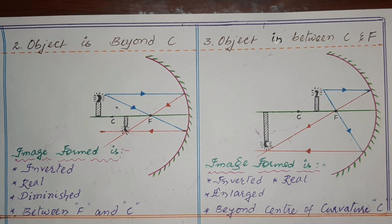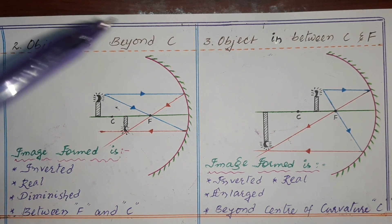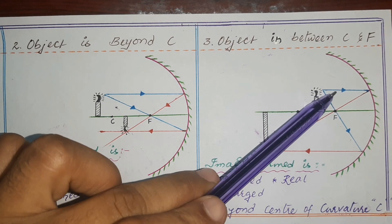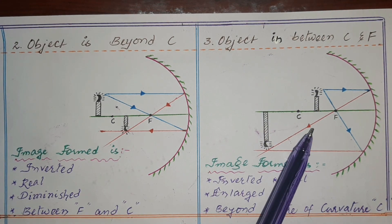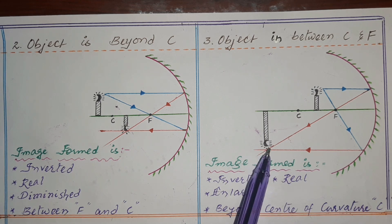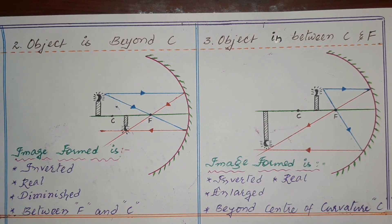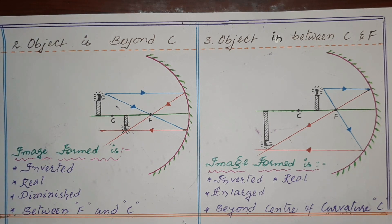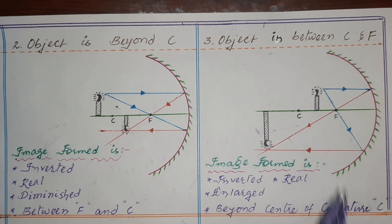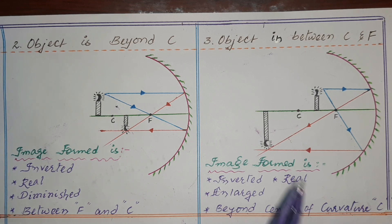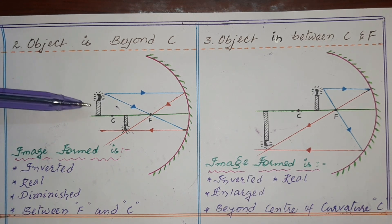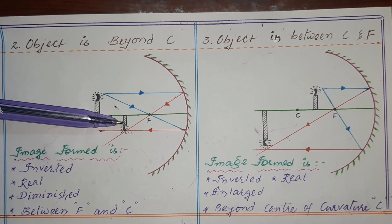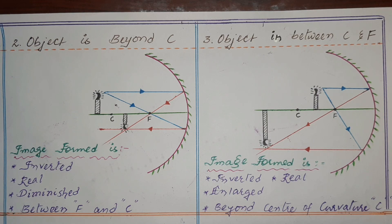In this ray diagram, incident light rays are shown in blue and reflected light rays in red. The two reflected light rays meet at a point where the image is formed. When the object is kept between F and C, the image is formed beyond C. This is the reverse of the previous case — when the object was beyond C, the image formed between F and C. These two are reverse cases of each other.